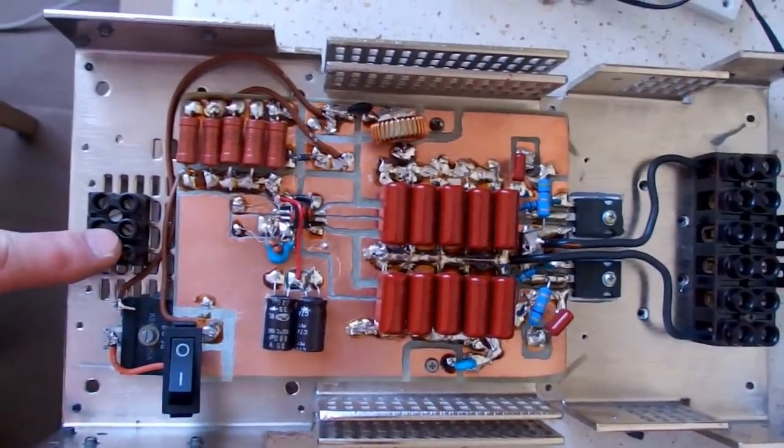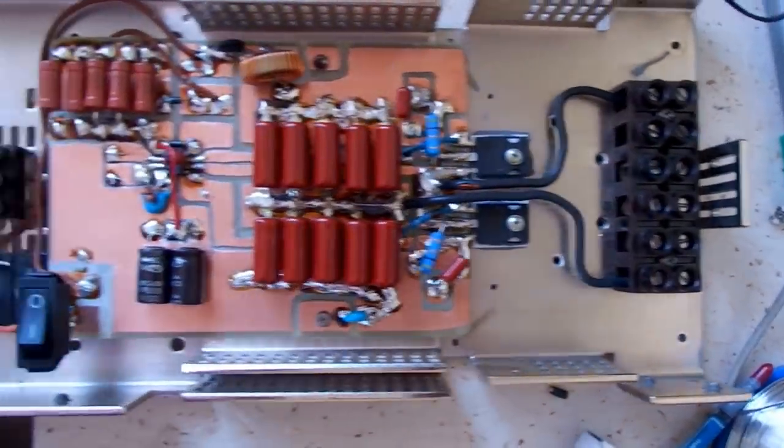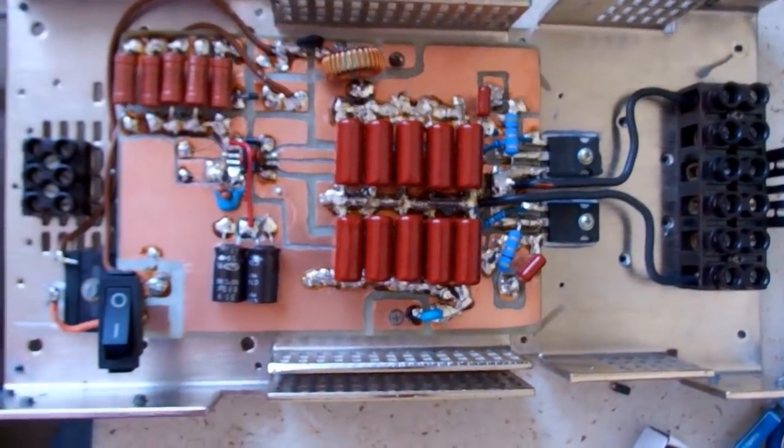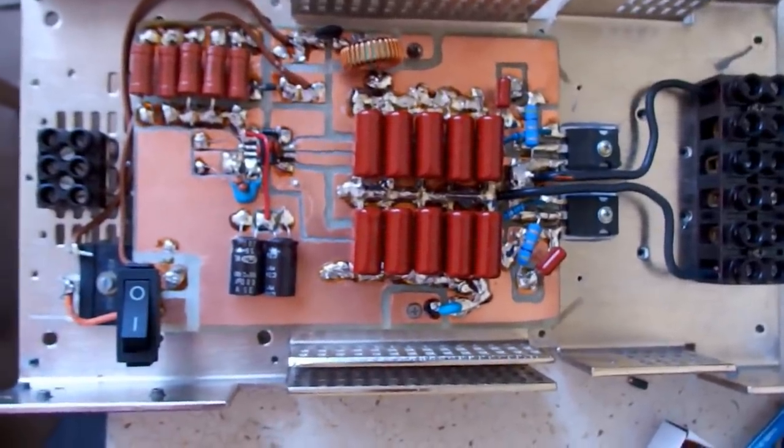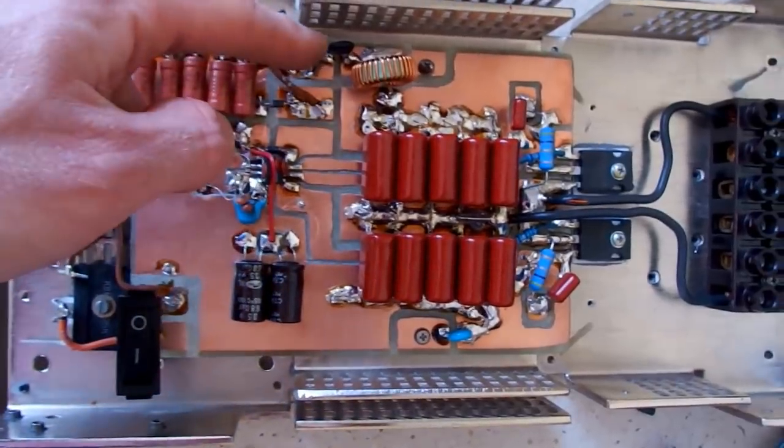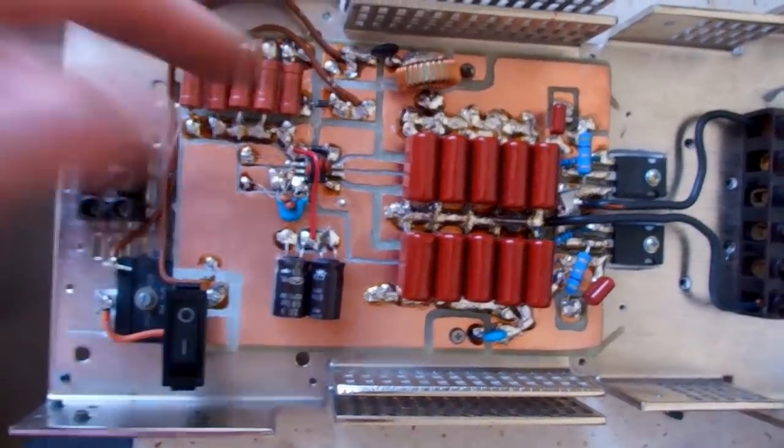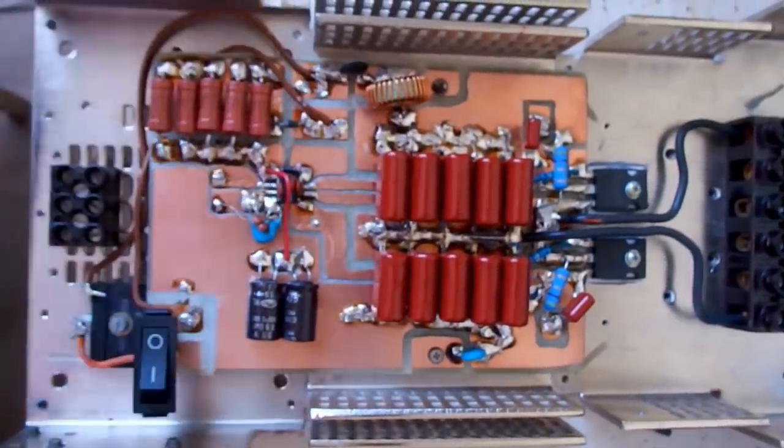So now it has some terminal block for the mains input, terminal block for the output, some dropper resistors, some switch, the bridge rectifier which works as just one diode, some NTC thermistor even though later I will probably put more in parallel, and some interference inductor.